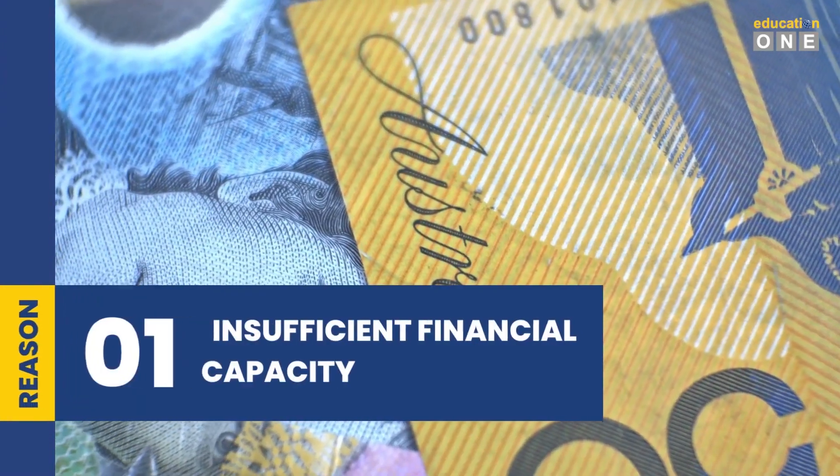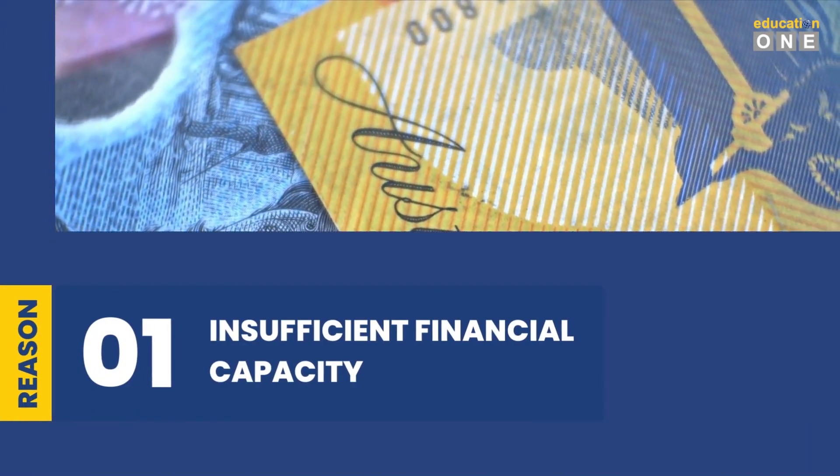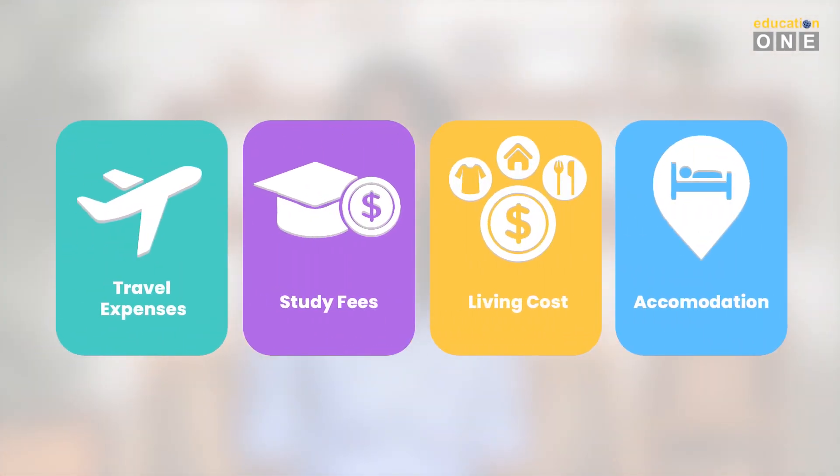Reason number one: insufficient financial capacity. The Australian Government requires students to have ample financial resources to cover their expenses during their study duration. This includes travel expenses, study fees, living costs and accommodation. It is crucial to have proof of financial support to avoid any financial difficulties that may distract you from your studies.